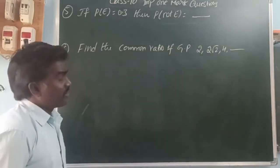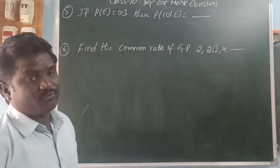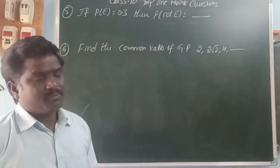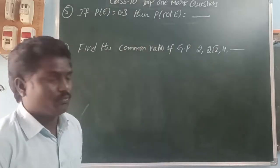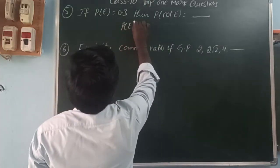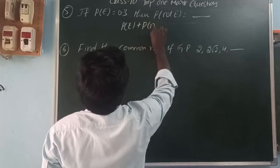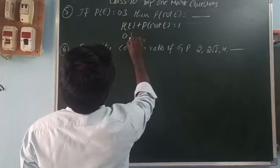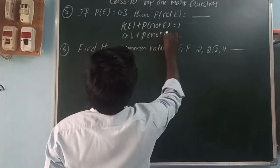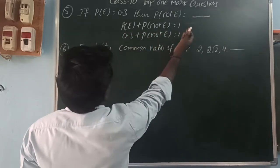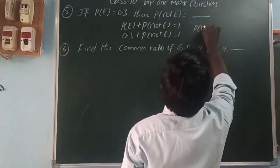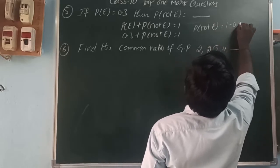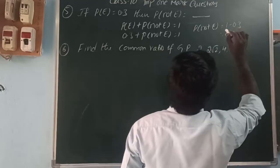If P(E) equals 0.3, find P(not E). The probability of all events in an experiment sums to 1, so P(E) plus P(not E) equals 1. Therefore 0.3 plus P(not E) equals 1, giving P(not E) equals 1 minus 0.3, which is 0.7.